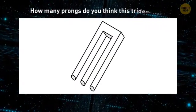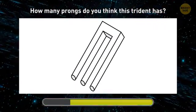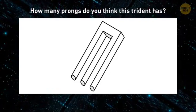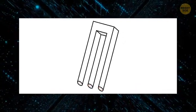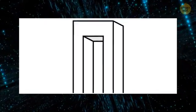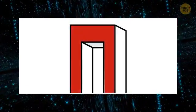How many prongs do you think this trident has? The correct number is 3. Nah, just kidding. That would be too obvious. The empty space between the prisms forms the central prong. Take a closer look at the top of the prongs. There are just two openings.